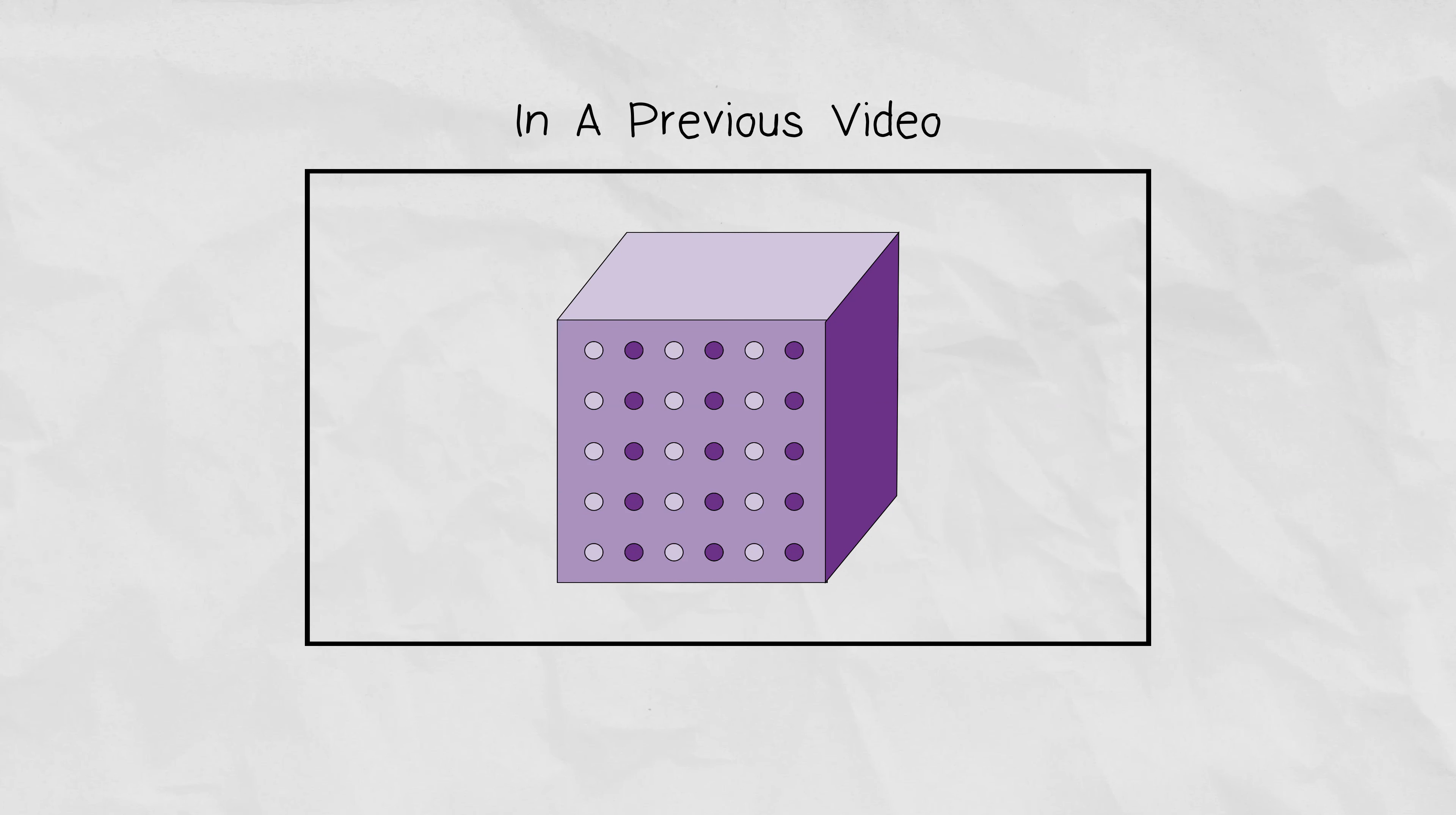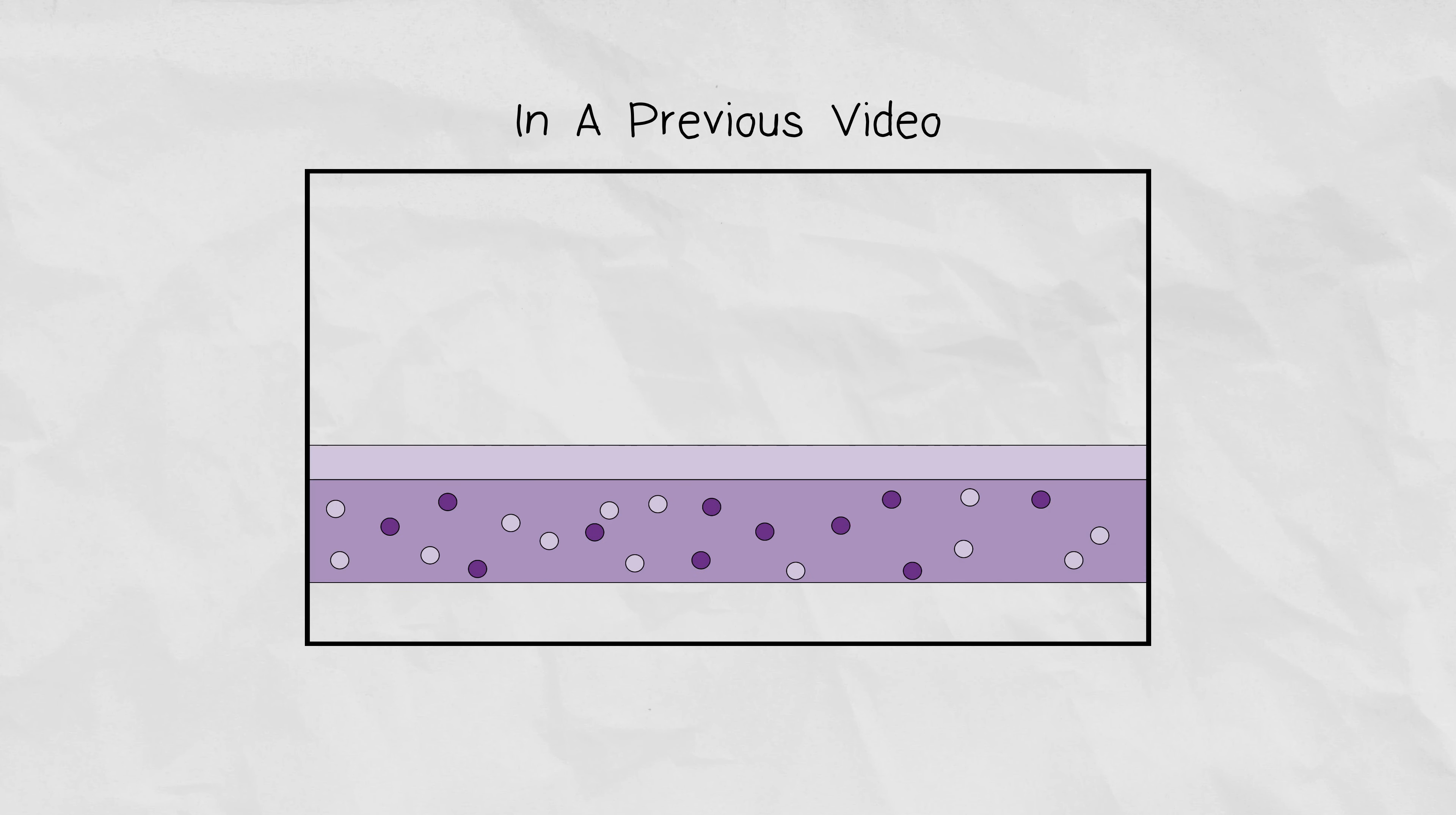In a previous video, we talked about the three states of matter and explained what happens on a particle scale. We talked about vibrating particles of solids that evolved into liquids when they gained the ability to rotate and translate.